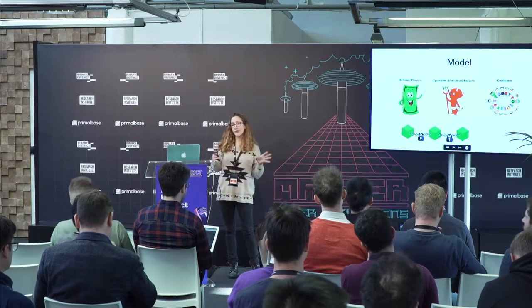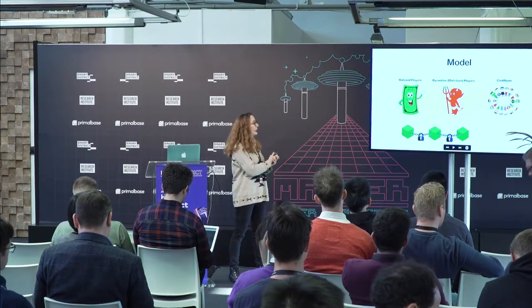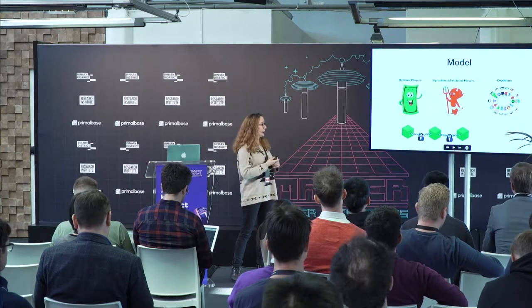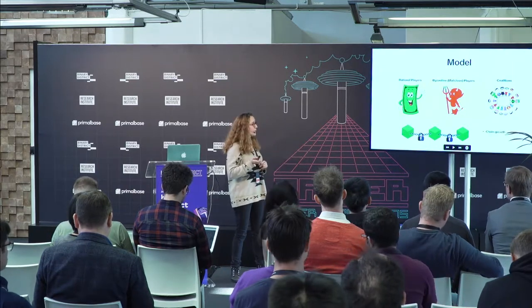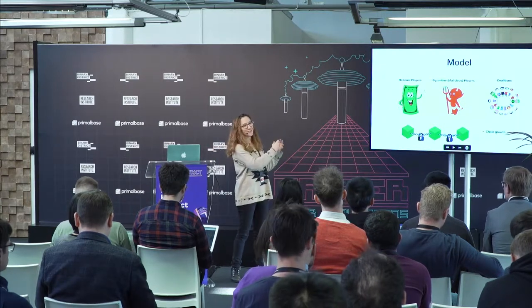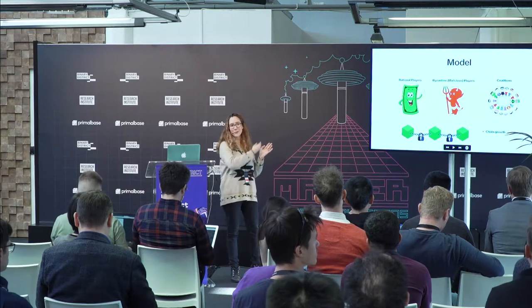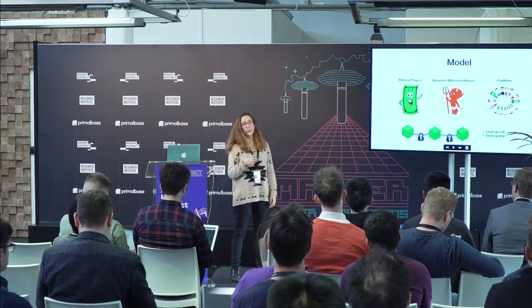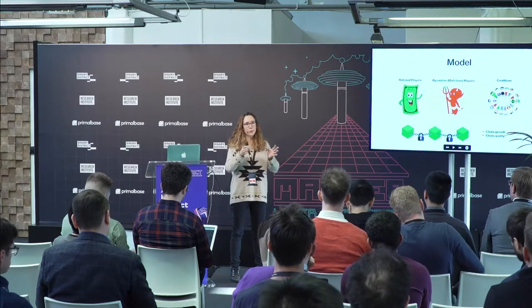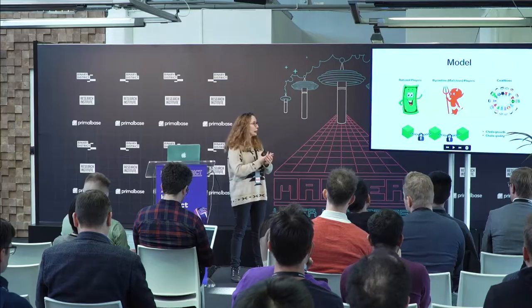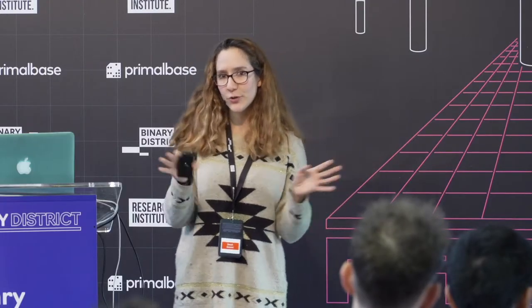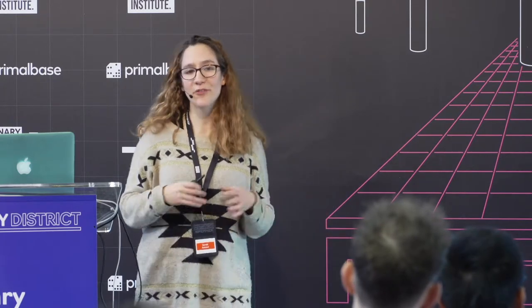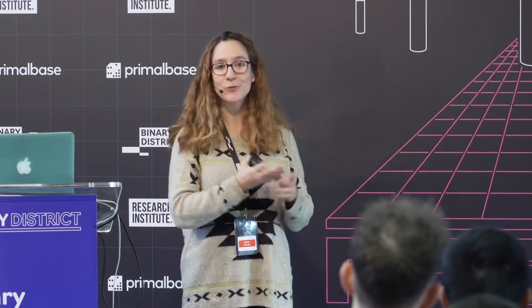In addition to these game-theoretic properties, we also want traditional blockchain security properties. Chain growth means blocks are created — this is like liveness in traditional consensus. Chain quality means an adversary cannot contribute more blocks than they are supposed to, proportional to their computational power. And common prefix means every participant has the same view of the blockchain — they agree on the chain.